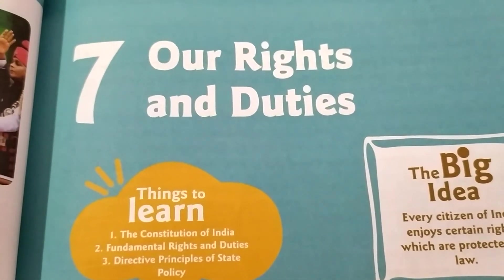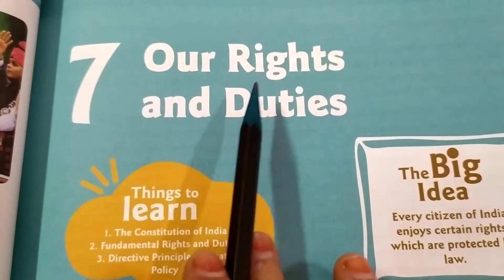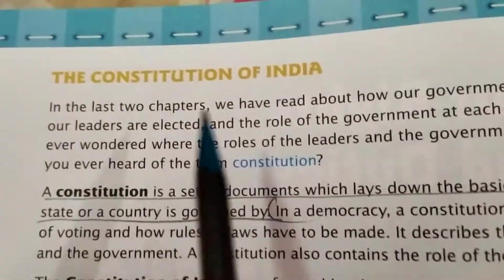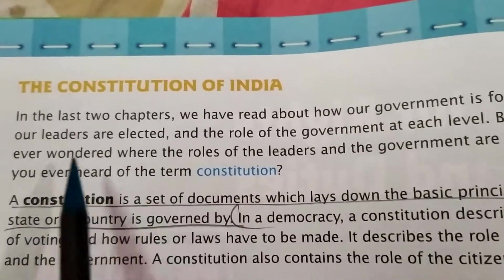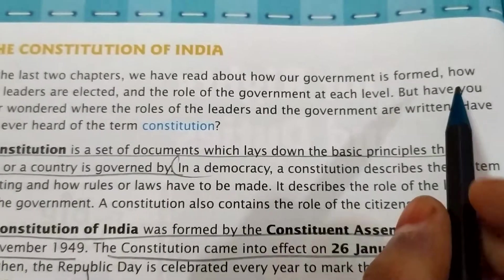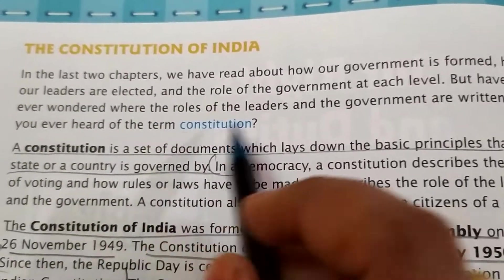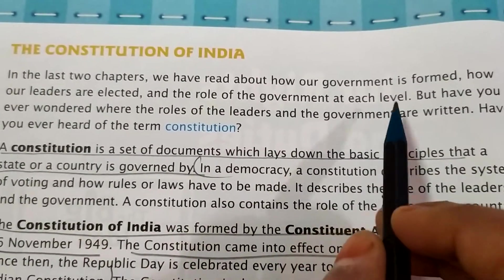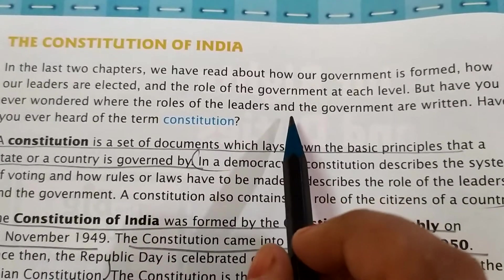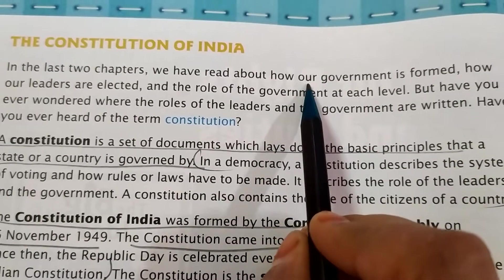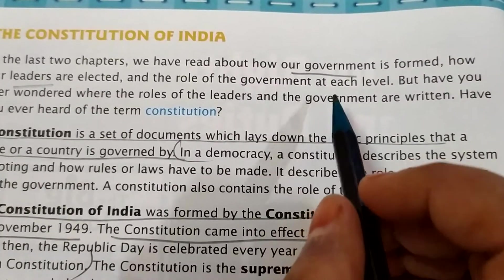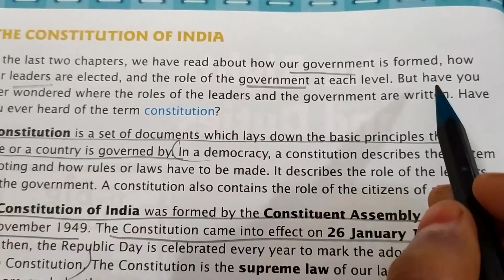Today we will start the new chapter, that is chapter 7: Our Rights and Duties. The first topic is the Constitution of India. In the last two chapters, we have read about how our government is formed, how our leaders are elected, and the role of the government at each level.